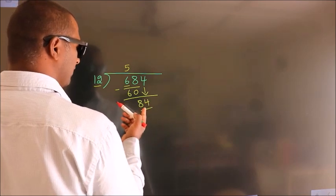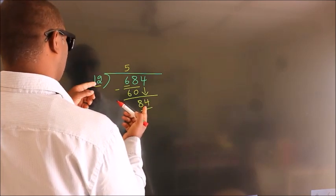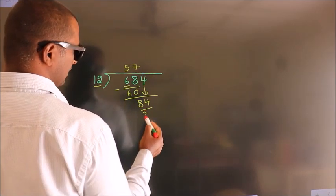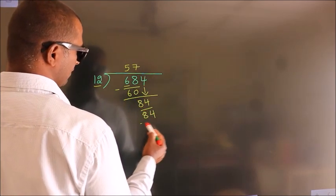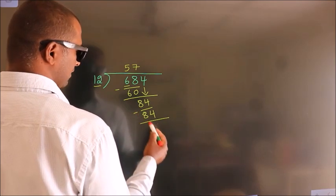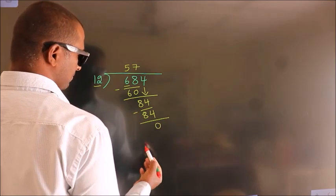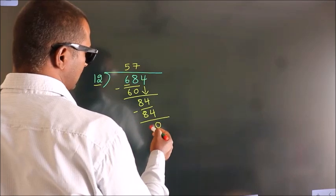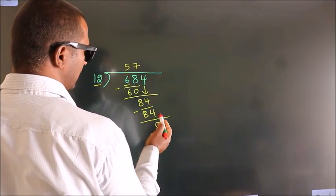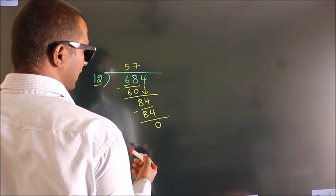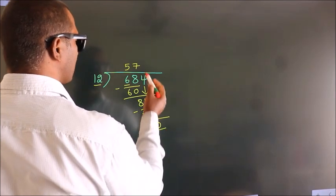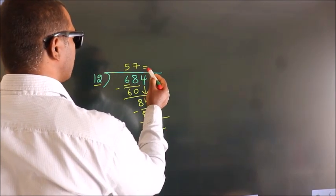When do we get 84 in the 12 times table? 12 sevens is 84. Now we subtract and we get 0. After this, there are no more numbers to bring down, so we get remainder 0. So this is our quotient.